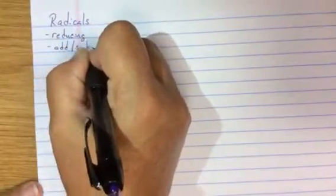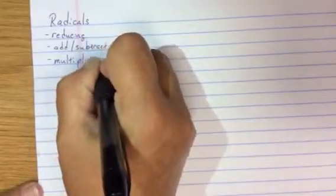Accuplacer prep for radicals. We're going to look at four major issues: reducing radicals, adding and subtracting radicals, multiplying, and dividing.